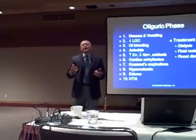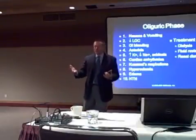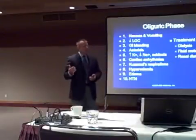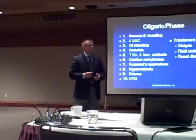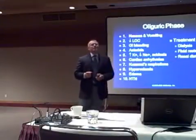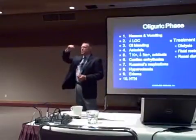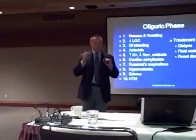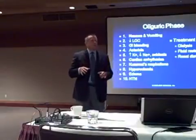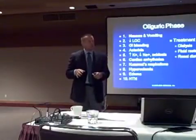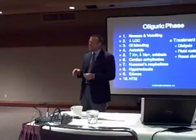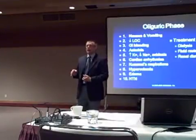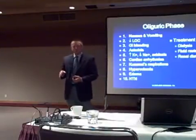BUN starts to build up in the body because it's not being filtered out, and urea nitrogen is very irritating to the tissue. So urea nitrogen is going to cause irritation of the brain, and the patient is going to have central nervous system depression. It's also going to cause peripheral nervous system irritability, as evidenced by asterixis.